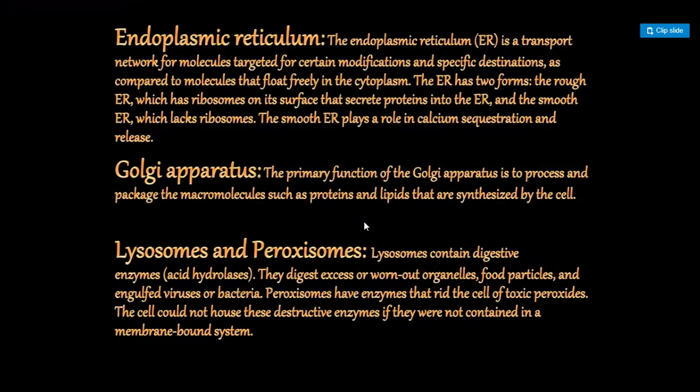The next topic is the Golgi apparatus. The primary function of the Golgi apparatus is to process and package macromolecules such as proteins and lipids synthesized by the cell. It consists of a set of membrane-bounded, fluid-filled vesicles existing in an extensive network near the nucleus in animal cells. The Golgi apparatus is absent in bacteria, blue-green algae, macrospores, and red blood cells.